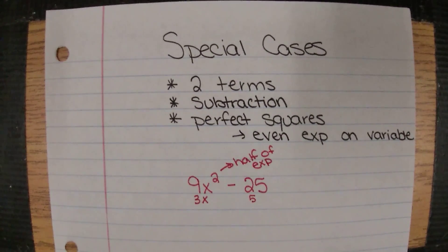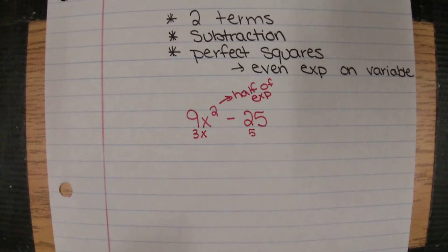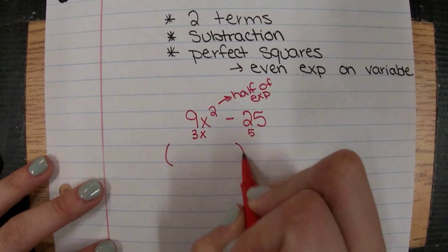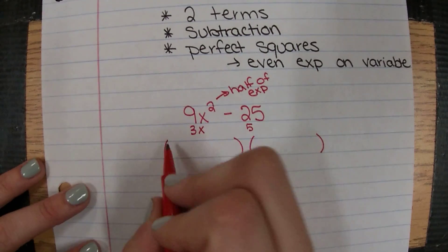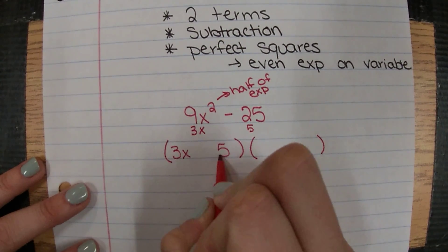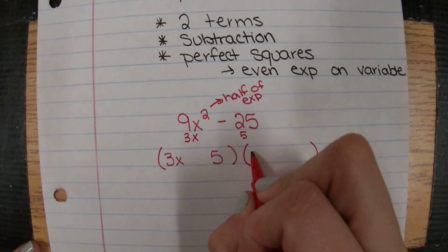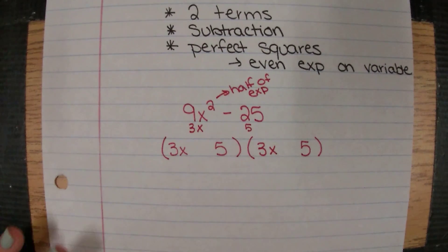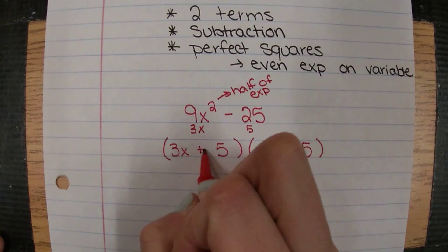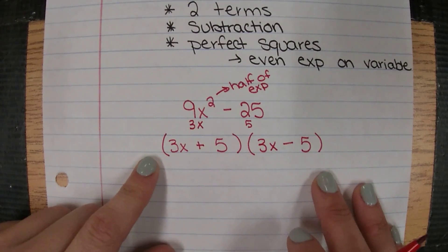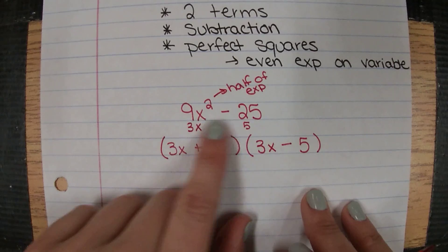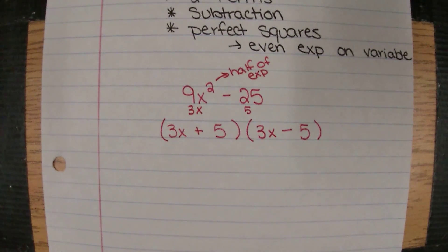Now the good news is, once we've done all of that, we can write this into two binomials. We have to keep these in the exact same order that we see them, so this will be a 3x and a 5. Now we need to put an operation in there. One is going to get addition and one is going to get subtraction. If you remember, when we learned about multiplying these, we called them conjugates. When we multiplied them out, the middle two terms cancelled out. So we get 3x plus 5 and 3x minus 5.